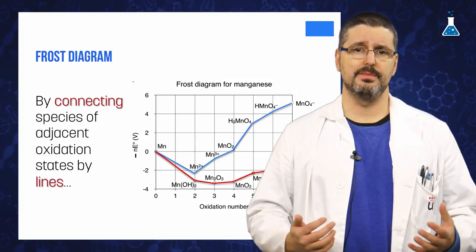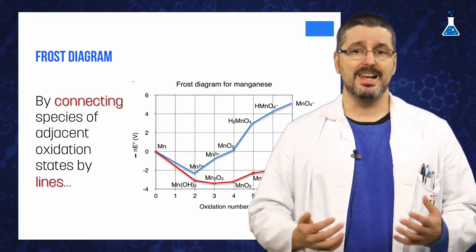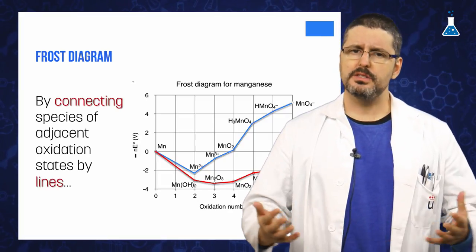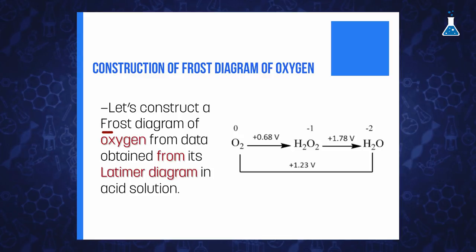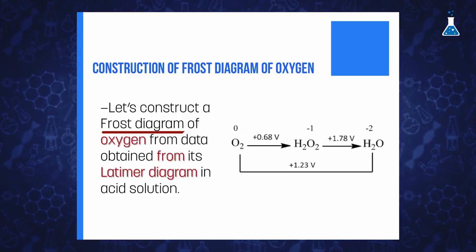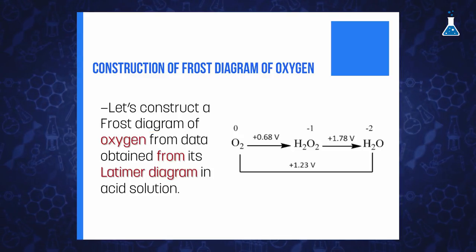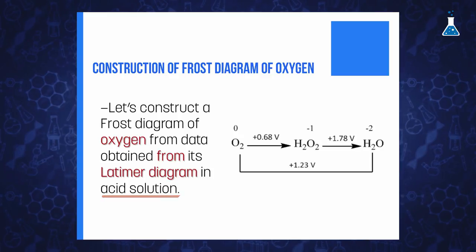In order to examine these important features of Frost diagrams and learn the way to construct them, let's do some examples. Let's examine the construction of the Frost diagram of oxygen from data of the Frost-Ebsworth-Latimer diagram in acidic solution. As we discussed, the first point of the Frost diagram will be the (0,0) point corresponding to the standard state of oxygen, that in this case is the dioxygen molecule, where the oxidation state of the element obviously is zero.